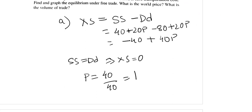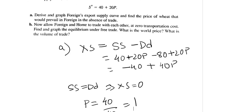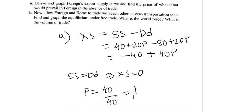Let us see what the second part of this question asks. The second part asks us to find the equilibrium under free trade if we allow Foreign and Home to trade with each other at zero transportation cost, and to figure out the world price and the volume of trade.